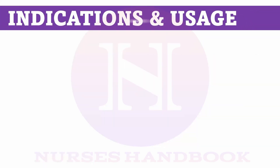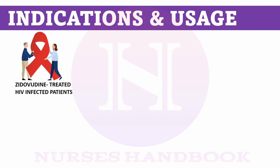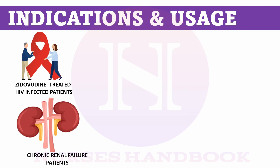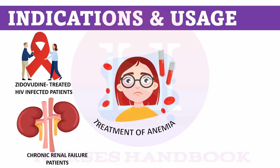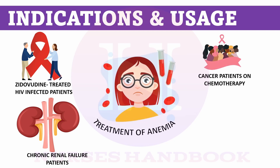Now let us see the indications and usage. It is given in zidovudine-treated HIV-infected patients, as anemia is common in these patients as a result of insufficient quantities of erythropoietin or bone marrow unresponsiveness to the hormones. It is also given in chronic renal failure patients whose kidneys are not able to produce erythropoietin, and in patients receiving chemotherapy to prevent anemia.